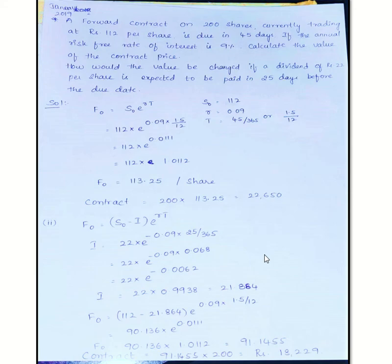So discounting of income, that is 22 × e^(-0.09 × 25/365) to discount back to spot price. The income of Rs. 22 dividend equals 21.864. We subtract this from the spot price of Rs. 112.